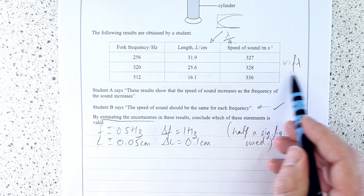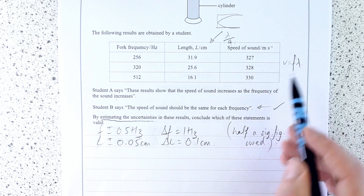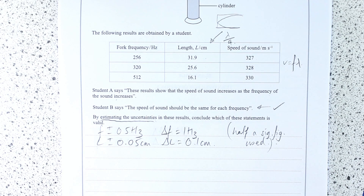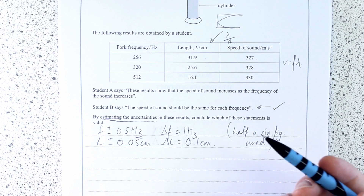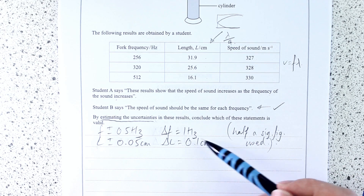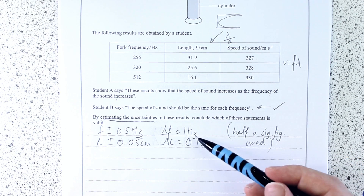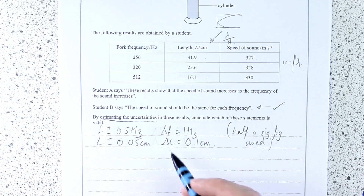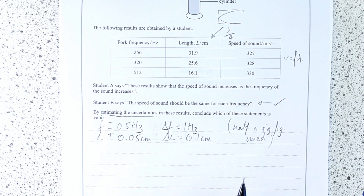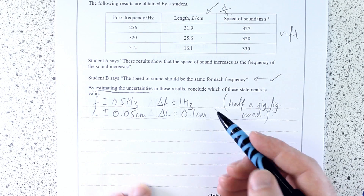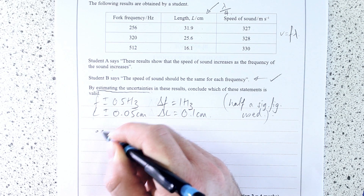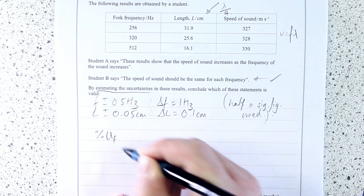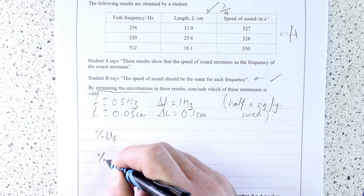Whenever we do a product or a division with two quantities, we cannot add the absolute uncertainties — they're not even the same quantity. We can't add frequency to length; that's completely meaningless. The universe doesn't work like that, so we can't mix our dimensions. But we can add percentage uncertainties. So your next step is to work out the percentage uncertainty for frequency first, and then for length.